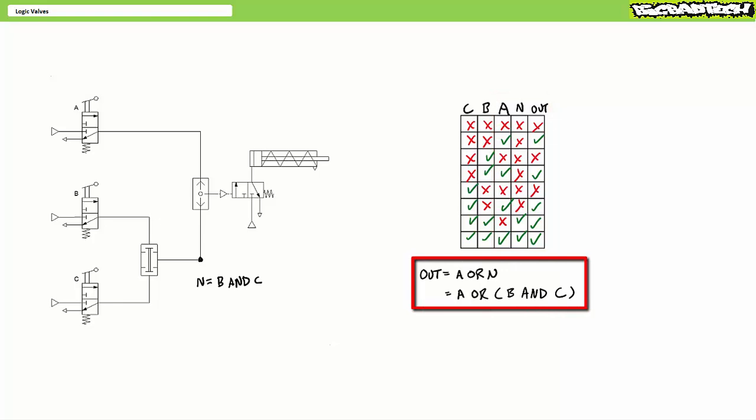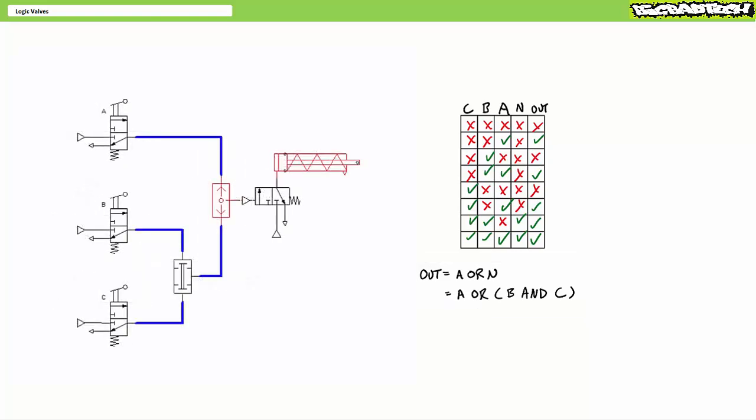Ultimately, this system is performing the function A OR B and C. Note the parentheses around B and C, meaning the logical AND operator is resolved first, i.e. the intermediary output N before it's ORed with A. Let's test this system to see if we're right.